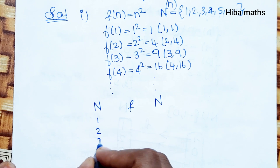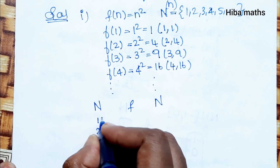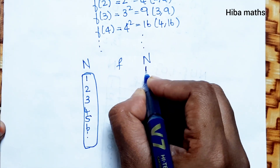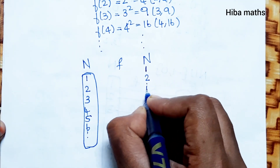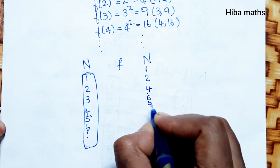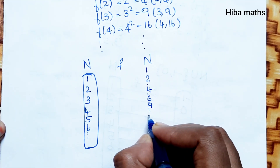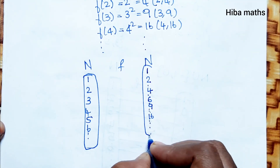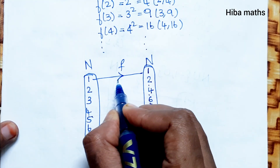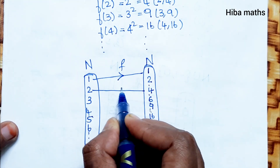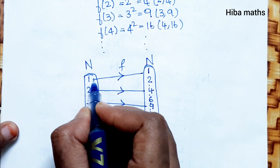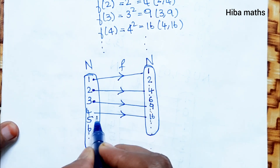In the arrow diagram, the domain has natural numbers 1, 2, 3, 4, 5, 6 and the range includes 1, 4, 9, 16. So in the function, 1 maps to 1, 2 maps to 4, 3 maps to 9, 4 maps to 16. We can see the function is one-to-one.